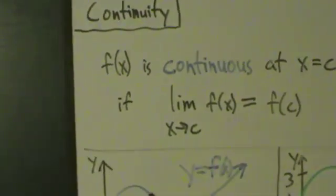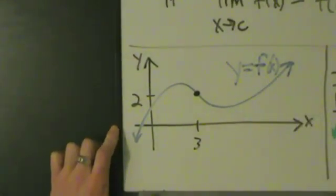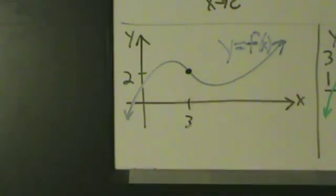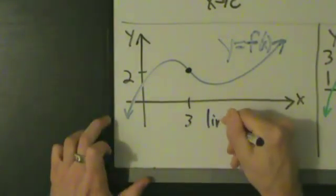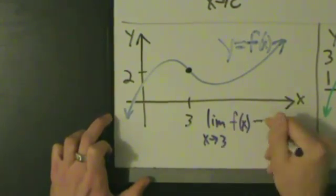So let's see a couple examples here. Let's first take a look at this one. y equals f(x), here's our function. So solid point here at 3, 2. What do we know about the limit as x approaches 3 of f(x)? What does it equal?